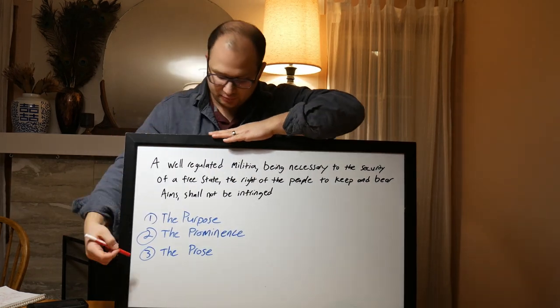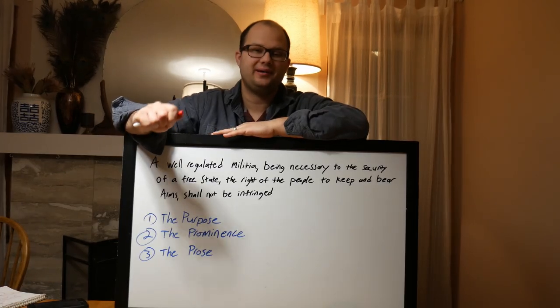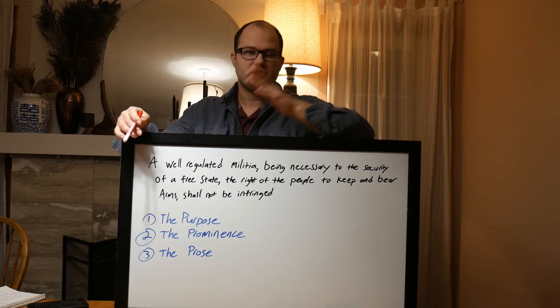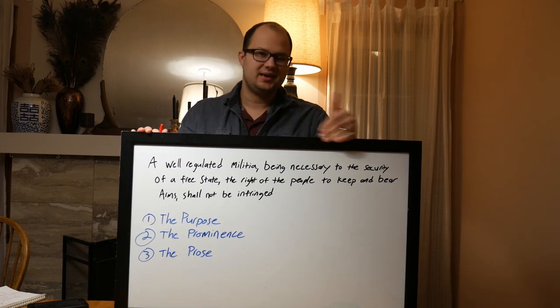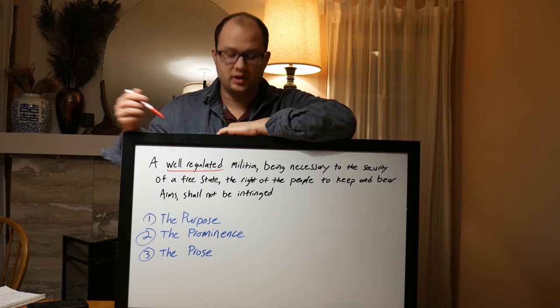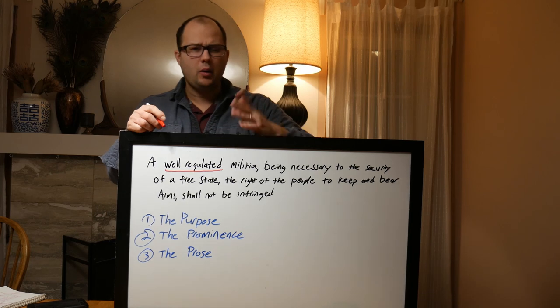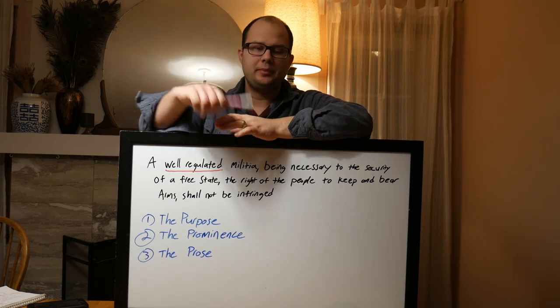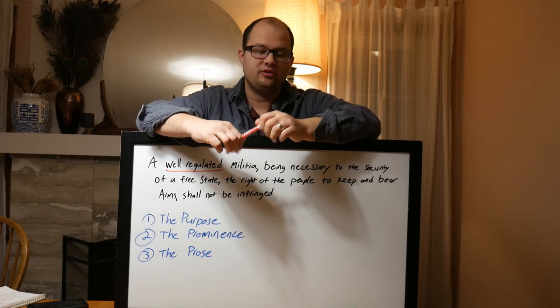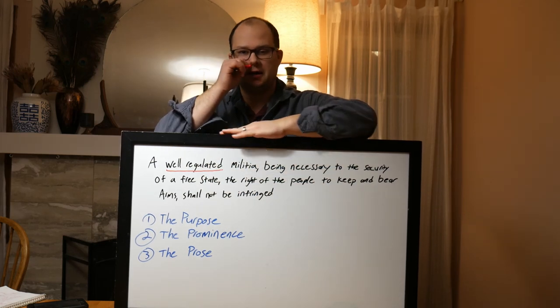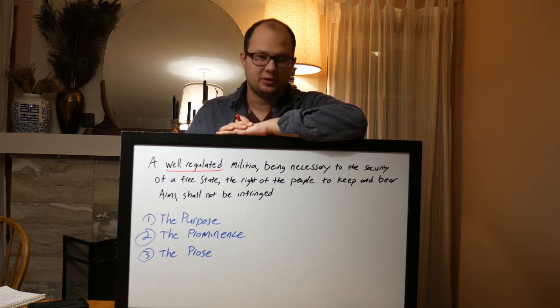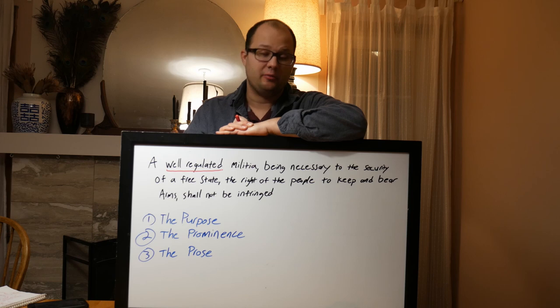Lastly, of course, is the prose. For those of you who aren't familiar, that means language, the language structure. So we're going to go through and note a couple key words in the second amendment. Now, the first one we're going to note is well-regulated, a well-regulated militia. People like to argue about what this term means. They will say things like it means regulation. And I can understand how some people can come to that conclusion. However, that's a pretty historically lazy way to interpret that, considering the time it was written in.